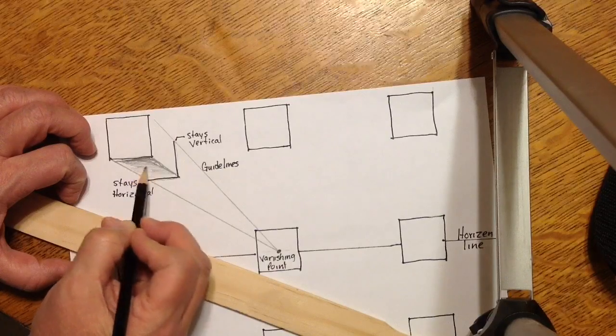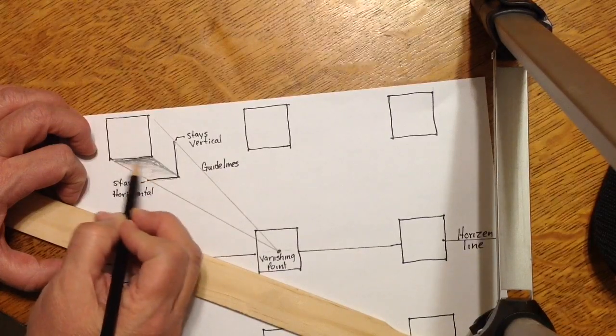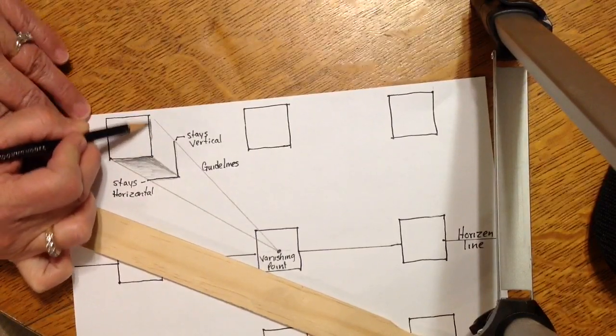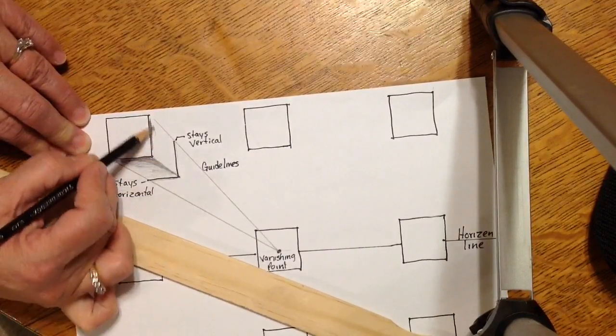And then you can shade, where you shade one side of the box, each line. Each line, one side is darker, the other side is lighter.